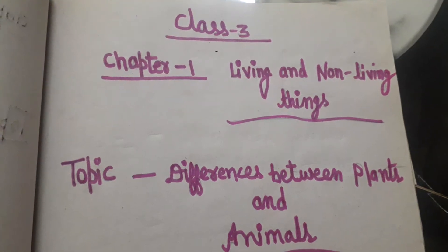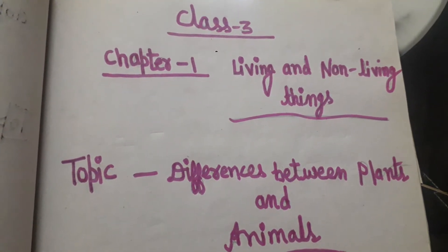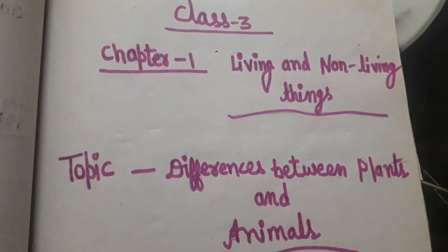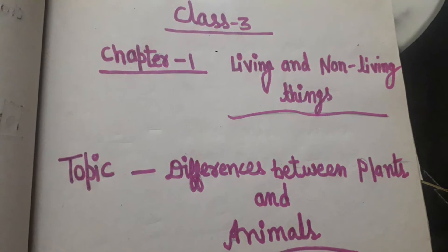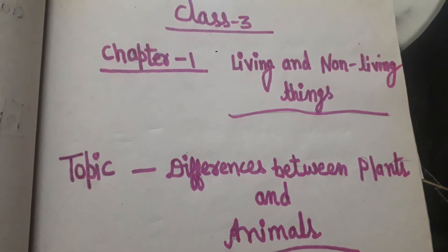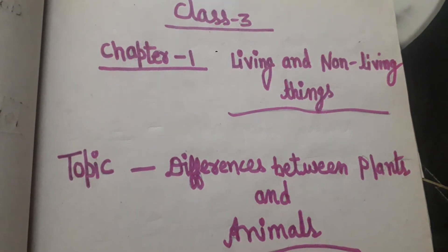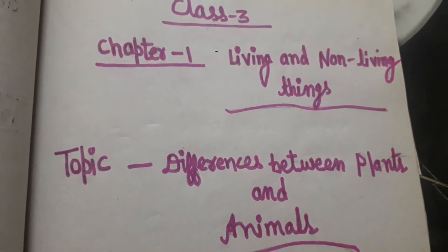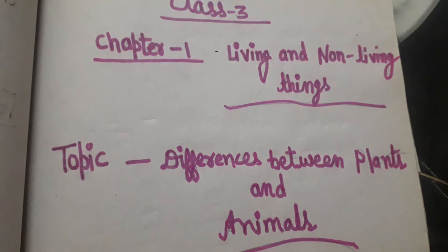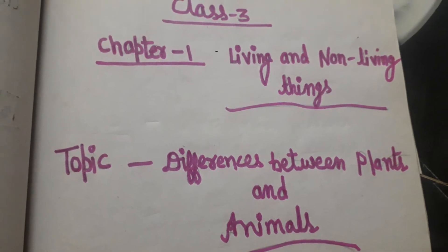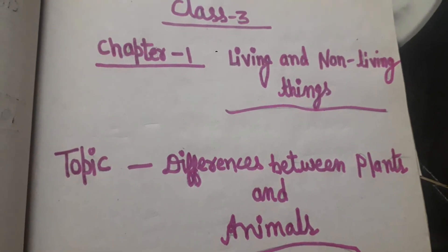Hello guys, welcome to Sony Online Classes. Today in this video we'll discuss Class 3, Chapter 1: Living and Non-living Things. The topic is Differences between Plants and Animals.